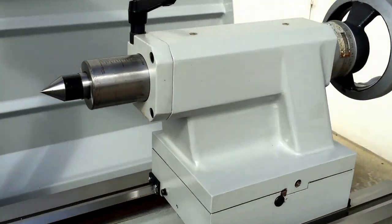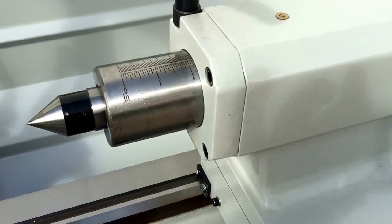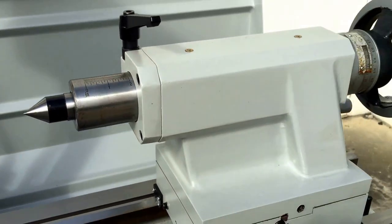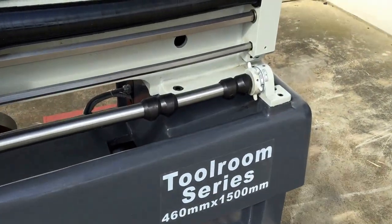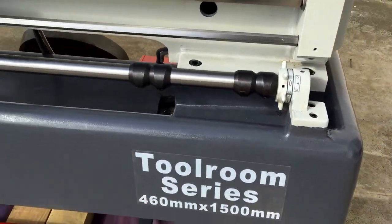Also our tail stock as you can see there is calibrated in both metric and imperial the same as all of our calibrations on our lathes. We have feed stop knockout there.